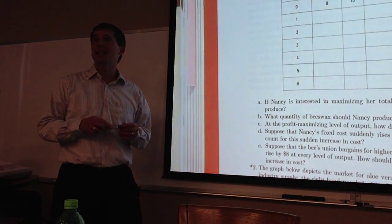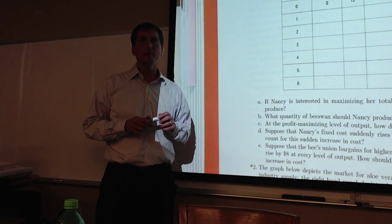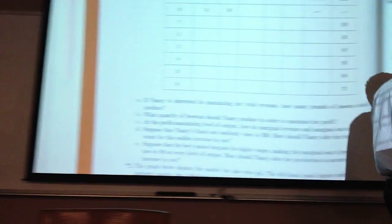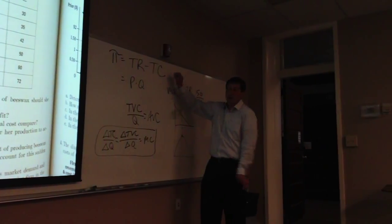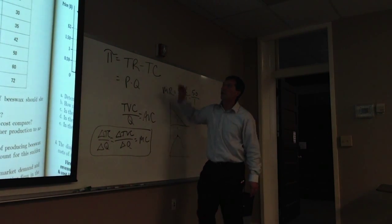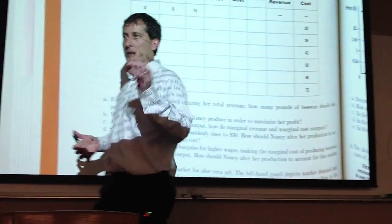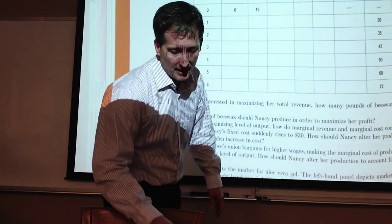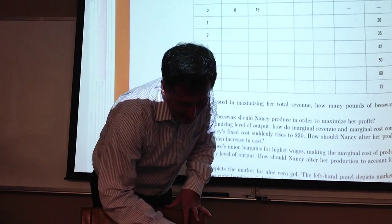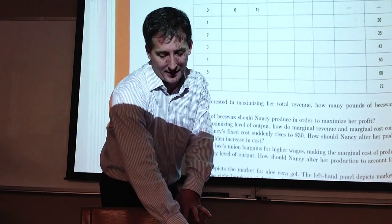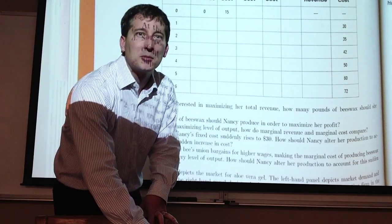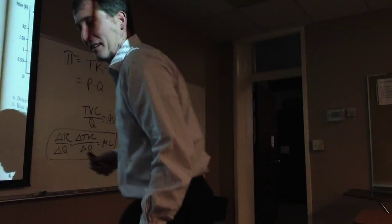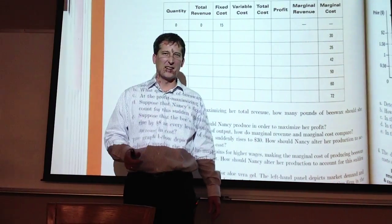Part D. Suppose that Nancy's fixed costs suddenly rise to 30. How should Nancy alter her production to account for the sudden increase in her fixed costs? She shouldn't change. Marginal cost doesn't change. Variable costs, not fixed costs. So you're going to get the same answer. Nancy should produce four units.